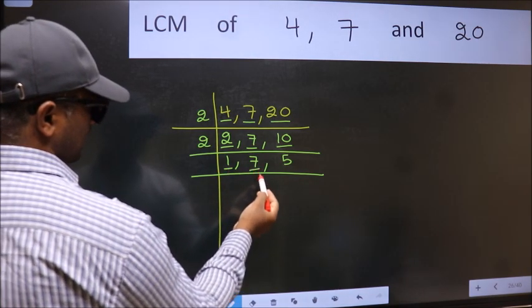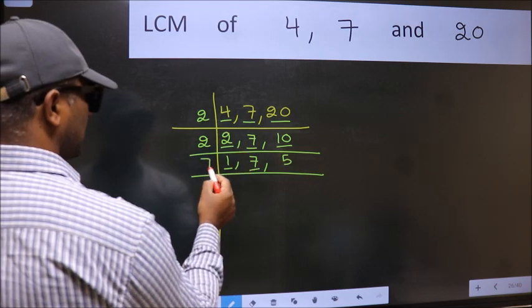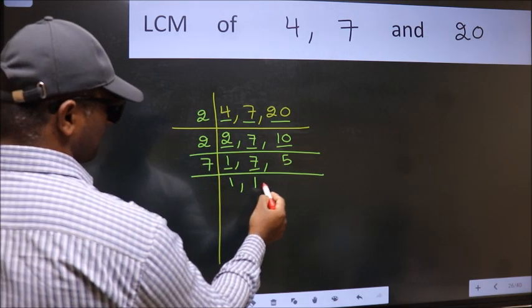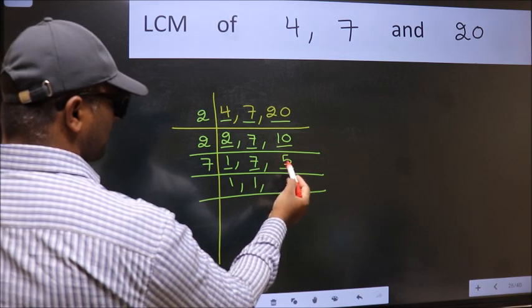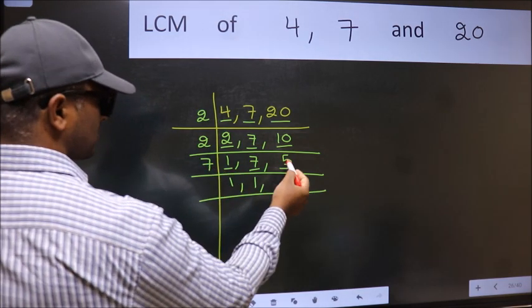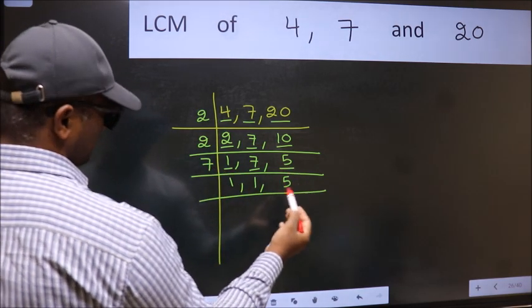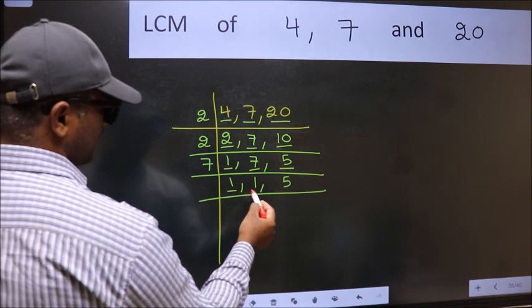So focus on the next number 7. 7 is a prime number, so 7 once is 7. The other number 5 is not divisible by 7, so we write it down as it is. Now we got 1 here and here.